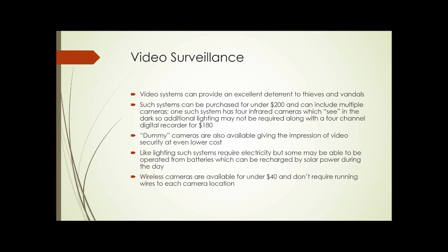That system includes a four-channel digital recorder for $180. Simply mounting some of these cameras — and dummy cameras are also available, which give the impression of video security at even lower cost; you can often buy these dummy cameras for $20 — and including a warning sign that video surveillance is being conducted gives an excellent deterrent. These do require electricity, but some can be operated from batteries rechargeable by solar power. There are also wireless cameras available for under $40 each that don't require running wires to each camera location, which can be an expense over a large area.